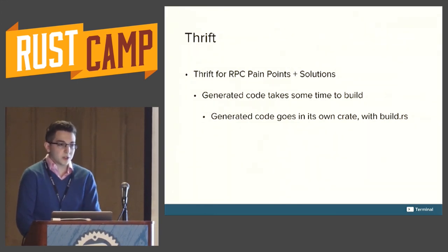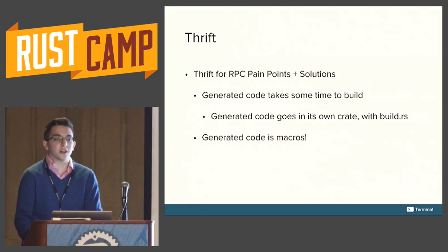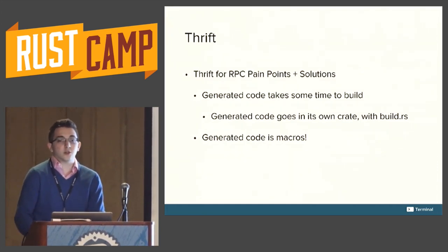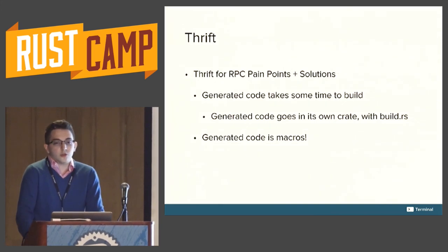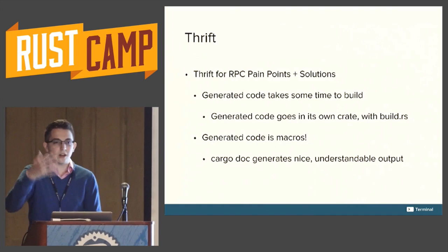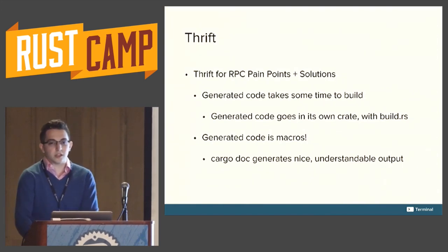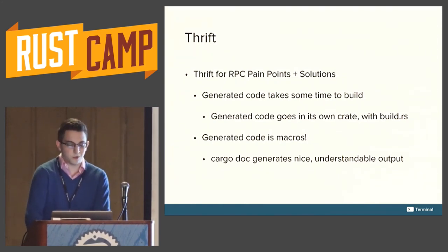Generated code is macros, so sometimes when you're trying to figure out how things actually work — what is the exact interface that's generated — it's not super clear, because even if you look at the generated code, all you see is macro calls. A nice solution: you can just use cargo doc, and it'll generate really understandable output where you can see the traits and how everything is actually generated, not just the unreadable macro spew.